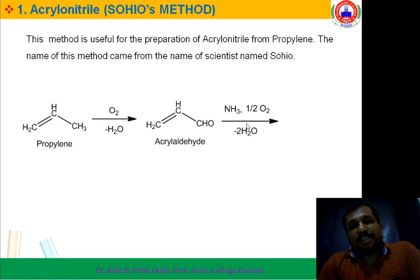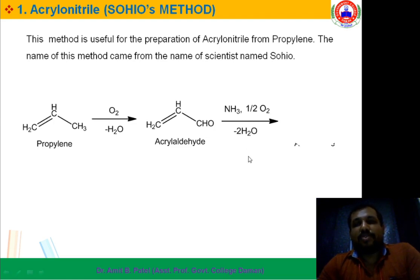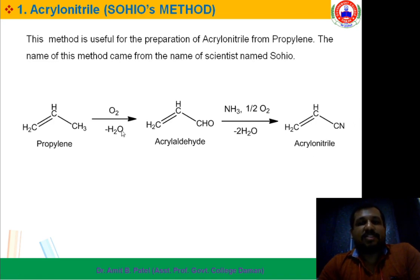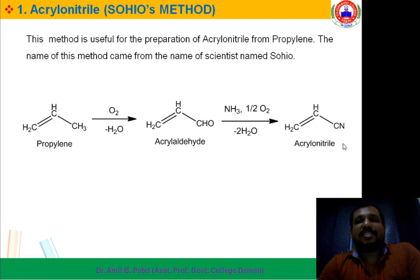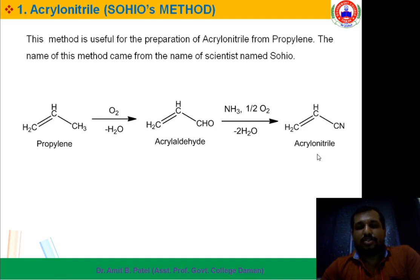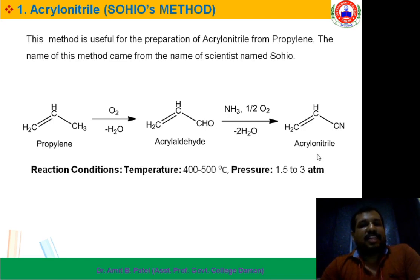The final step is Ammonolysis in the presence of Ammonia to form Acrylonitrile. If you closely see, the changes occur at this position only — CH3 to CHO, and CHO to CN. That is Nitrile. Acrylonitrile has three carbons and one CN group.